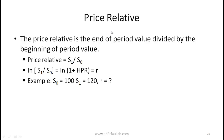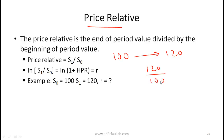This reading also covers the concept of price relative and the distinction between continuous compounding and the stated annual rate. The price relative is the end-of-period value divided by the beginning-of-period value. For example, if a stock starts at 100 and ends at 120, the price relative is 120 over 100, which equals 1.2. The holding period return is 20%, which is 1.2 minus 1, and since the holding period is one year, this is also the effective annual return.